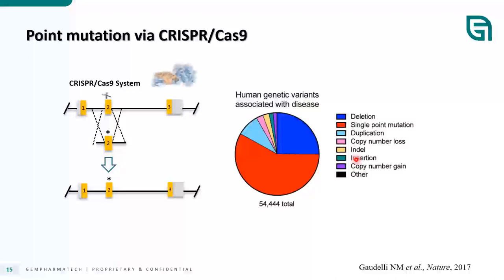The last strategy is introducing point mutations via knock-in. Since most human genetic variants associated with disease are single point mutations, and the mouse and human genomes are highly similar especially in coding genes, introducing a corresponding point mutation into the endogenous mouse gene generates a homozygous, homologous disease model suitable for studying genetic variant function and drug evaluation.